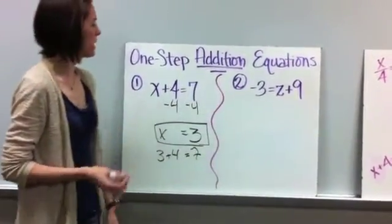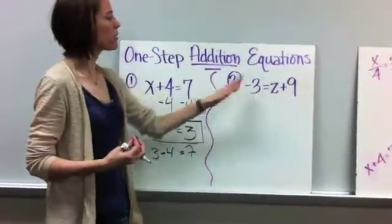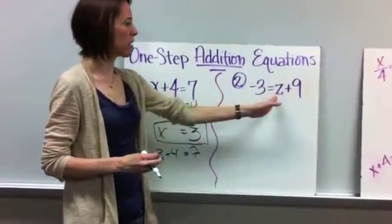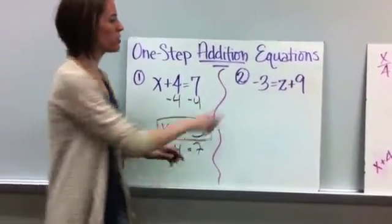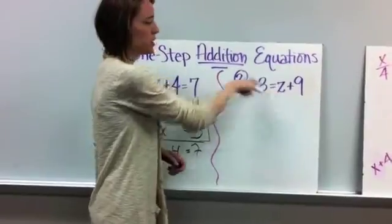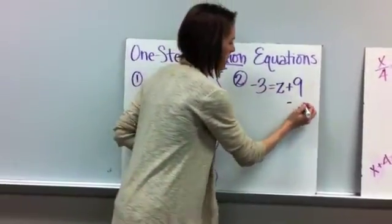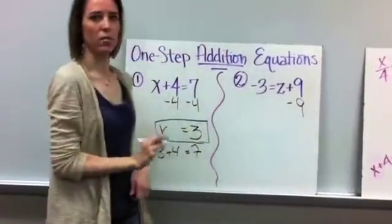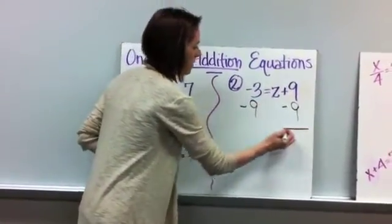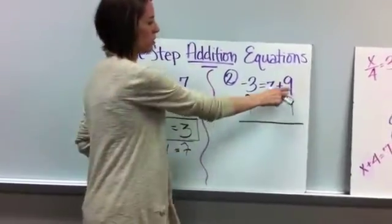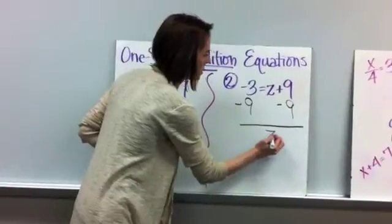So in this second example, basically the same thing. The only differences are we have the numbers on the other side of the equal sign and the variables on the opposite side that it was over here. Okay, same rules, though. You still want to isolate this number, so the inverse operation of a positive 9 is now a negative 9. And remember, if you do something to one side, you have to do it to the other. So 9 minus 9 is 0, and we're just going to carry down our z.